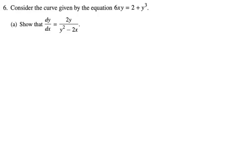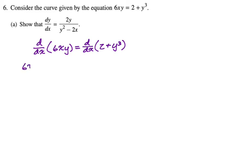We're going to start off by taking d/dx of both sides of that equation. On the left-hand side we need a product rule: first term is 6x, times derivative of the second which is dy/dx, plus the second term y, times derivative of the first which is 6. On the right, the derivative of 2 is 0, and then of y cubed is going to be 3y squared dy/dx. Don't forget the chain rule.